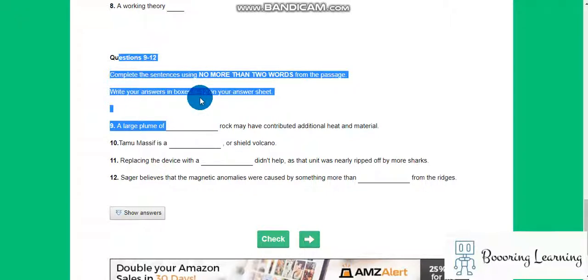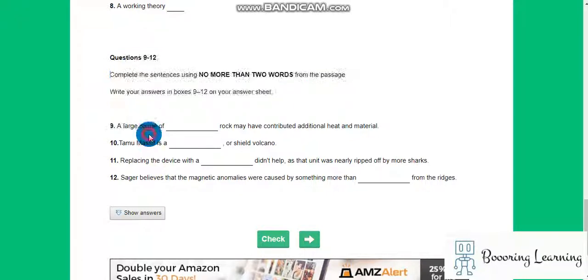Write your answer in boxes 9 to 12 on your answer sheet. A large plume of may have contributed additional heat and material.